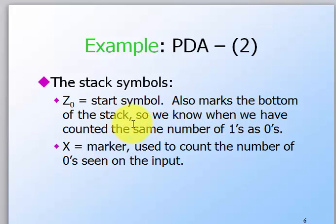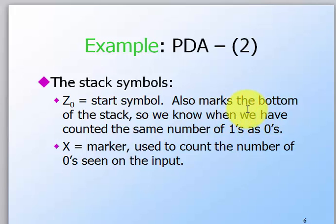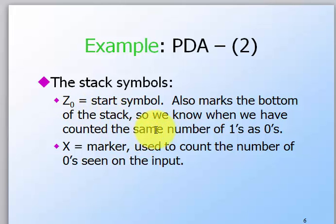The stack symbol also has a start symbol — it marks the bottom of the stack. A stack, as you would know from data structures, is a container where you can push and pop things. At the bottom is the start symbol, Z-naught. After that you keep putting in inputs. X is the marker used to keep count of the numbers of zeros and ones.